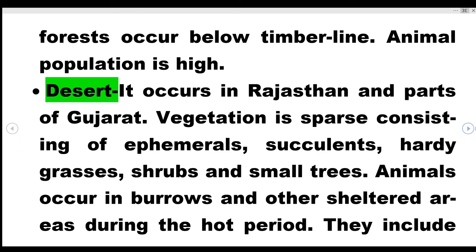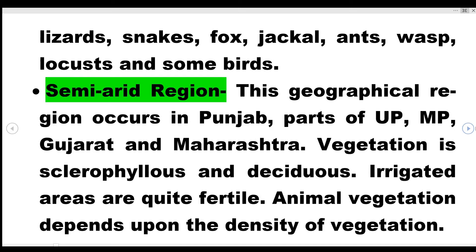Deserts occur in Rajasthan and parts of Gujarat. Vegetation is very low; what vegetation exists is ephemeral, succulents, hardy grasses, shrubs, and small trees. Ephemerals are short-lived plants that complete their life cycle very quickly. Animals occur in burrows and other sheltered areas during the hot period. They include lizards, snakes, fox, jackal, ants, wasps, locusts, and some birds.